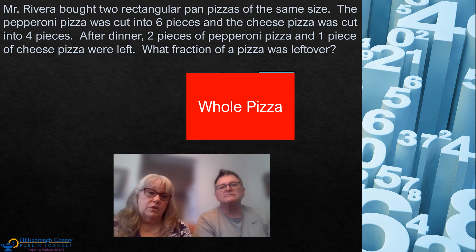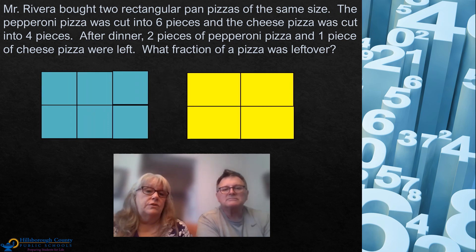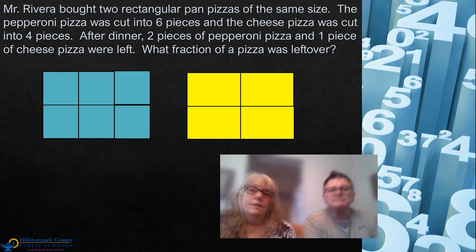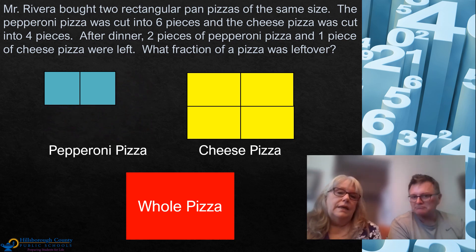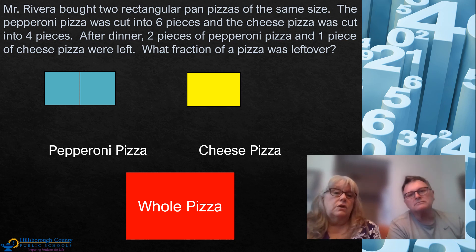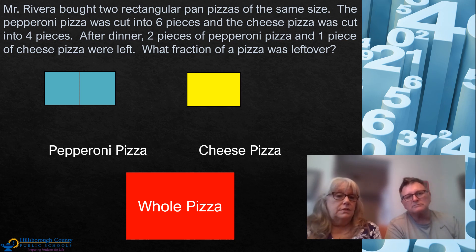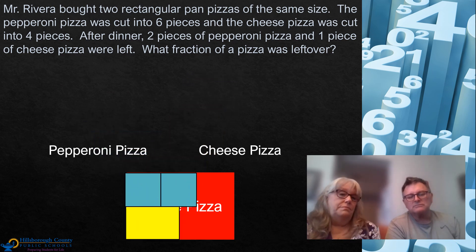I know that my pizzas are rectangles, so here's a whole pizza in the shape of a rectangle. I have two pizzas: one is cut into six equal parts and the other is cut into four equal parts. There are only two pieces of pepperoni pizza left, so four pieces must have gotten eaten. And there's one piece of cheese pizza left, which means they must have eaten three of those pieces. The question is asking what fraction of pizza is left over, so here are my leftover pieces — I'm going to put them onto that whole pizza rectangle so we can add those pieces together.